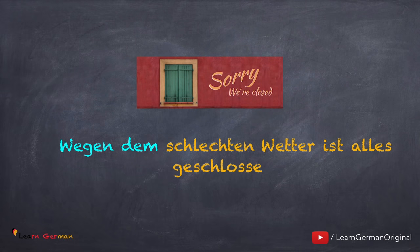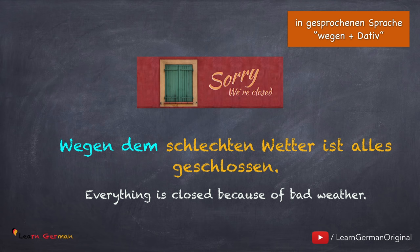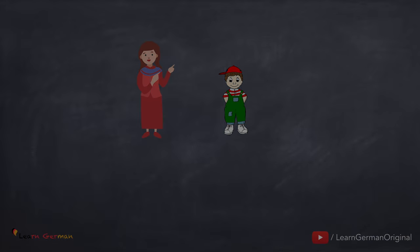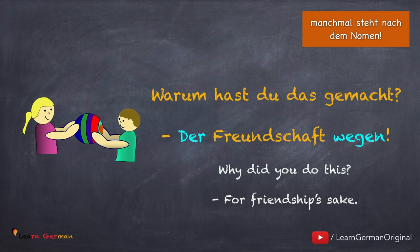You can also use this preposition with Dativ in spoken language: Wegen dem schlechten Wetter ist alles geschlossen. Das ist aber nur in der gesprochenen Sprache. Hier ist noch ein Beispiel: Wegen ihm habe ich den Zug verpasst. Man benutzt mit 'wegen' auch Dativ-Personalpronomen. Manchmal steht 'wegen' auch nach dem Nomen — zum Beispiel: Warum hast du das gemacht? Der Freundschaft wegen. Aber das ist auch nur in der gesprochenen Sprache.